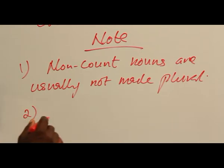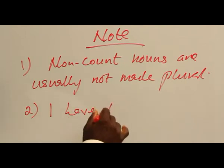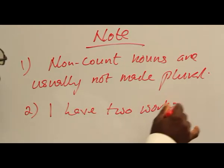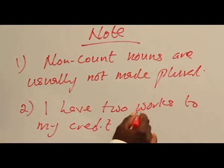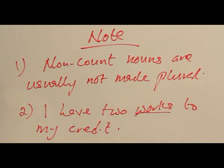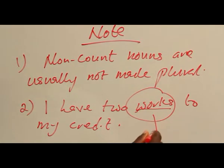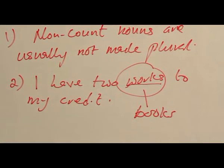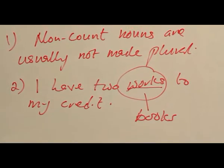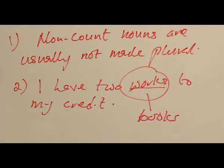If we take the word — let's take the sentence: 'I have two words to my credit.' Now, words here have been made countable, but we look at it as a non-count noun. Here, the word 'words' assumes a different meaning, such as books, meaning that I have two books to my credit. So the word 'works' here doesn't carry the same meaning as the non-count noun 'work.'